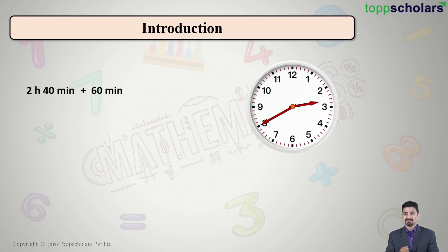So I will be having 2 hour 100 minutes as my answer. But 60 minutes means 1 hour. So when I add 60 minutes in the watch, the minute hand will travel one complete rotation for one hour like this, correct?